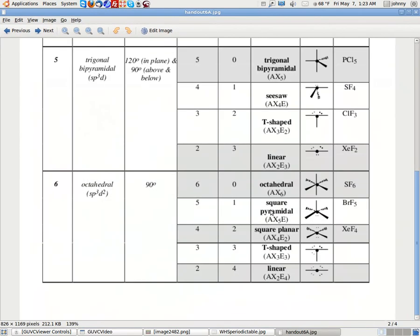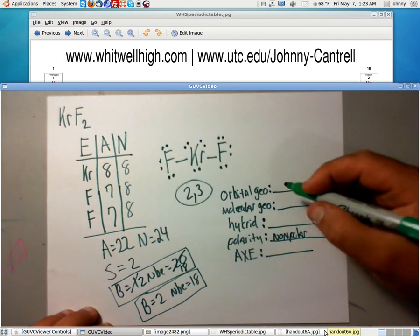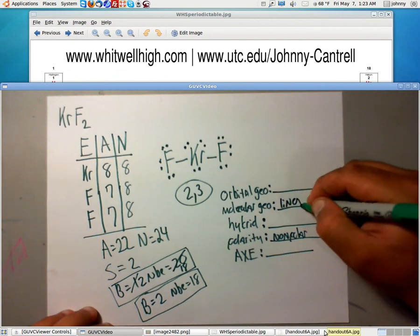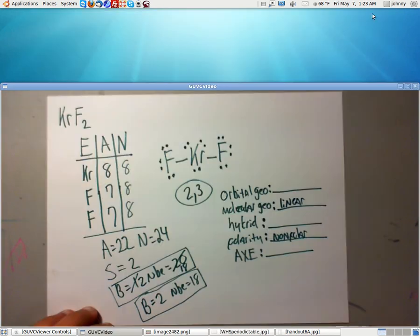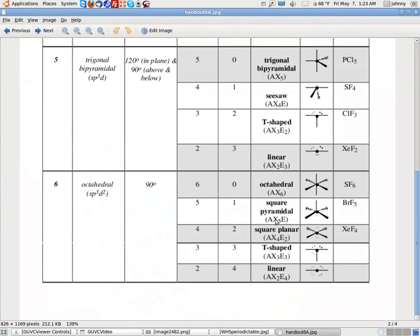It's nonpolar. What else? It's linear for its molecular geometry. Let's write that down. Linear. Its hybridization. What was its hybridization? AX2E3. Oh, excuse me. Its AXE notation is AX2E3.